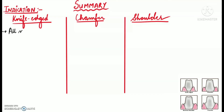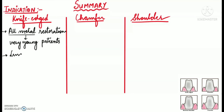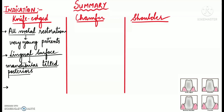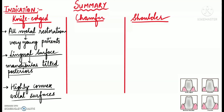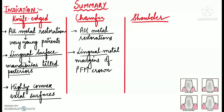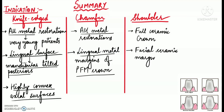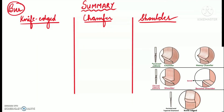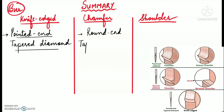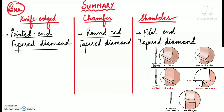Regarding indications: the knife-edge finish line is indicated for all-metal restorations in very young patients where minimal tooth reduction is required, and can also be used on the lingual surface of mandibular tilted posterior teeth and in teeth with highly convex axial surfaces. The chamfer finish line is indicated for all-metal restorations and for the lingual metal margins of a PFM crown. The shoulder is indicated for full ceramic crowns and for the facial ceramic margins of a PFM crown. As for burs: a pointed-end tapered diamond bur is used for knife-edge, a round-end tapered diamond bur for chamfer, and a flat-end tapered diamond bur for shoulder.